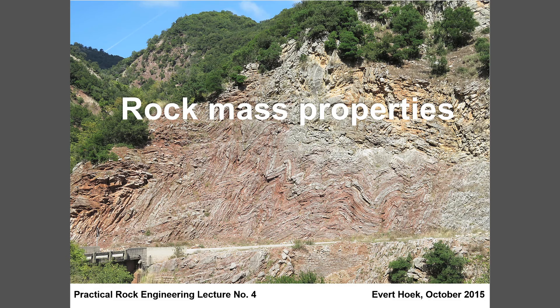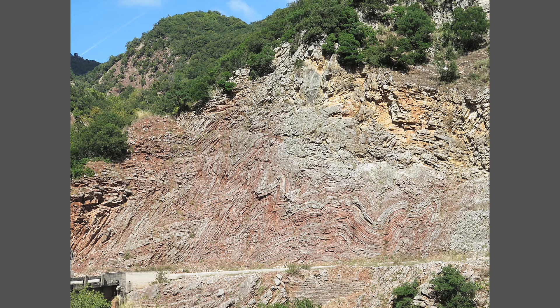In this lecture on rock mass properties, I'm going to be discussing the issues of rock mass behavior where the intact pieces discussed in the last lecture are now separated by discontinuities and, although tightly interlocking, have a much weaker strength performance. In the opening slide you see a road cut in Greece, and it's obvious from the folding and deformation that occurred in that rock mass that we're no longer dealing with anything like an intact material.